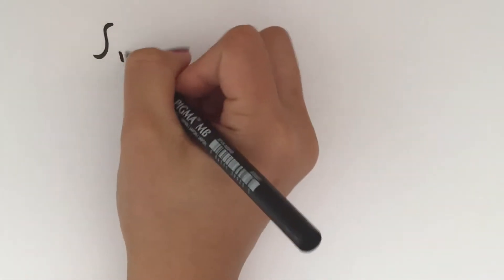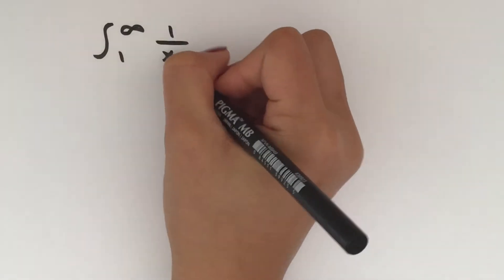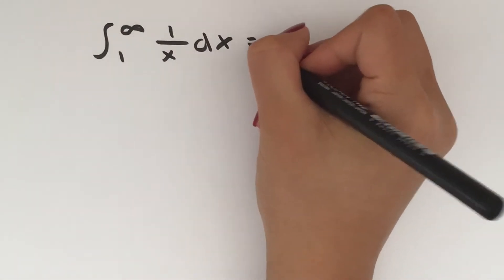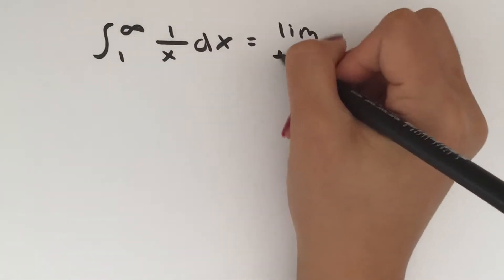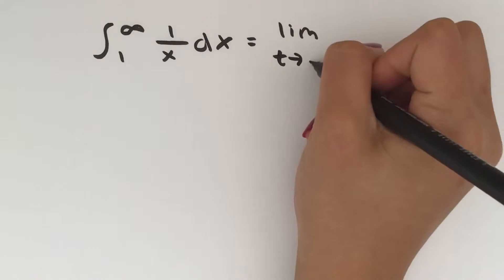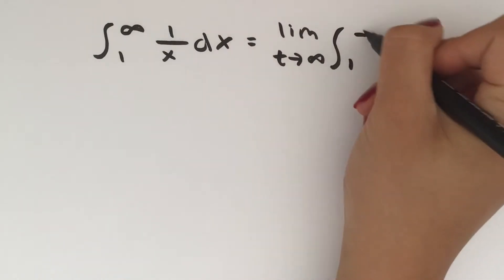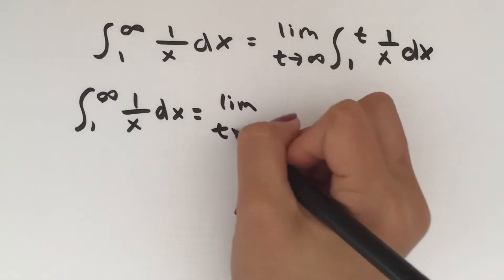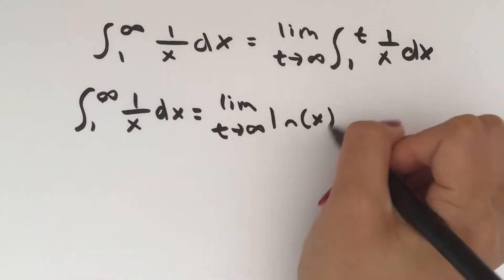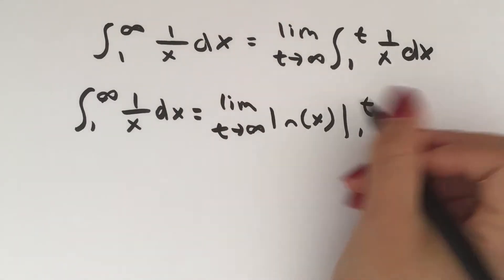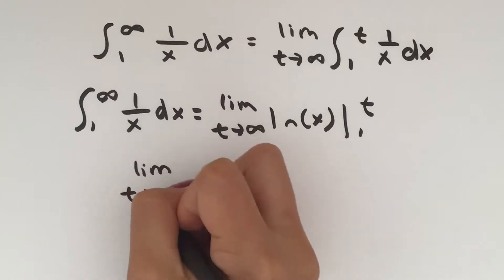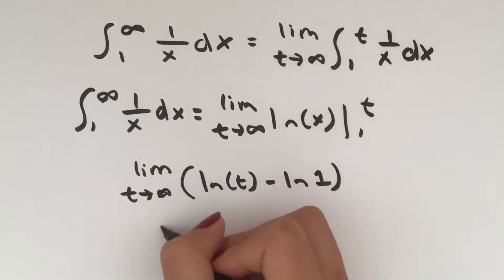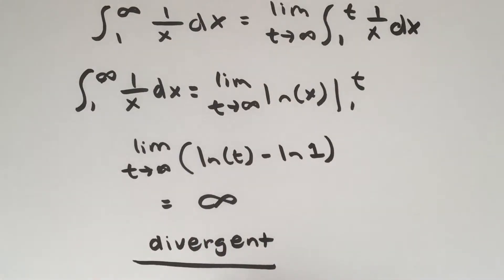However, improper integrals don't always converge to a number. For our next example, we're going to take the integral from 1 to infinity of 1 over x dx. We again convert to a limit, giving us the limit as t approaches infinity of the integral from 1 to t of 1 over x dx. We take the anti-derivative of 1 over x, which is ln x, from 1 to t, giving us the limit as t approaches infinity of ln t minus ln 1, which gives us infinity, meaning the integral is divergent.